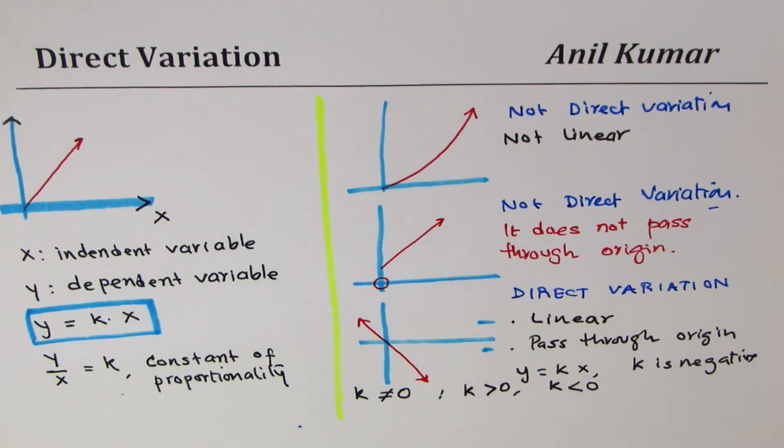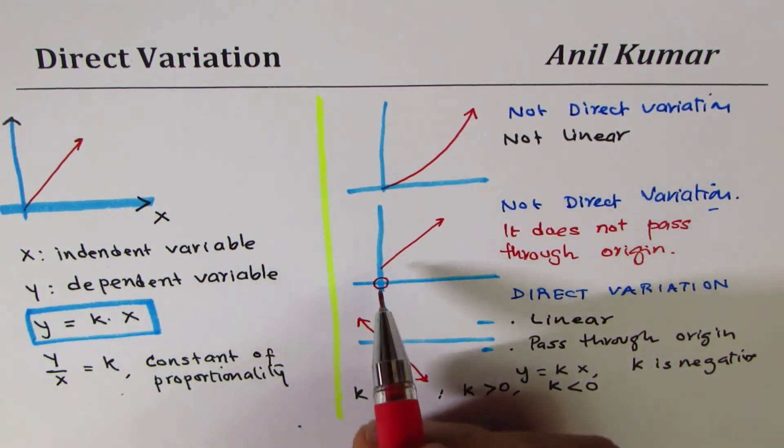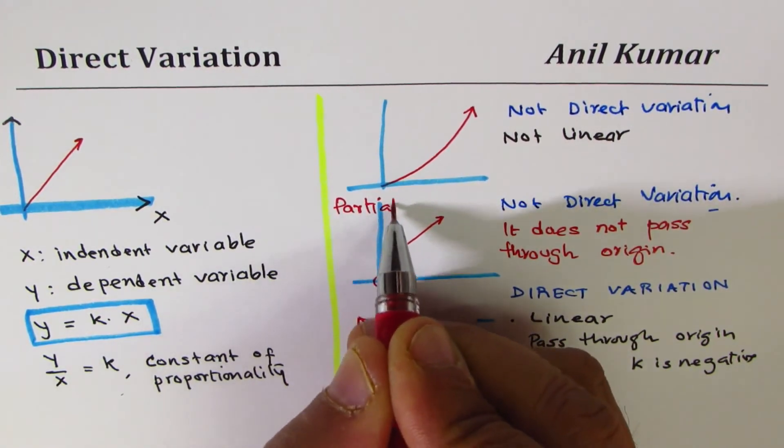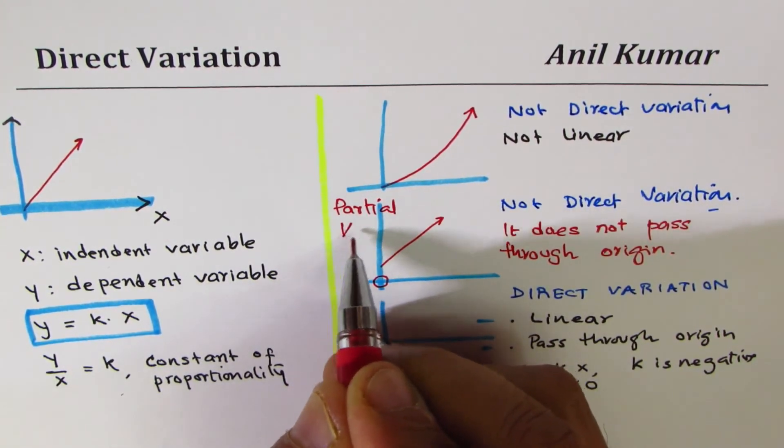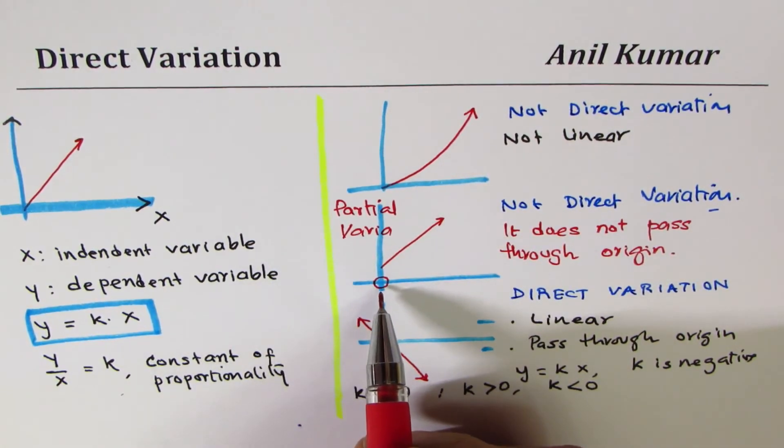Now if it is not, as in this case, can you tell me what type of variation is this? We call this as partial variation which will take up in the next video. So this kind of variation which does not start with origin or the y-intercept is not origin is called partial variation.